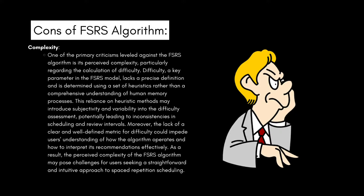The main con of the FSRS algorithm is complexity. One of the primary criticisms is its perceived complexity, particularly regarding the calculation of difficulty. Difficulty, a key parameter in the FSRS model, lacks a precise definition and is determined using a set of heuristics rather than a comprehensive understanding of human memory processes. This reliance on heuristic methods may introduce subjectivity and variability into the difficulty assessment, potentially leading to inconsistencies in scheduling and review intervals.